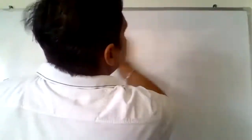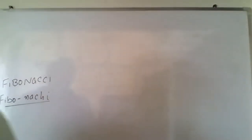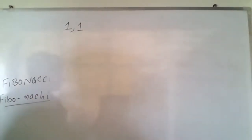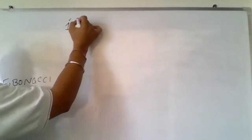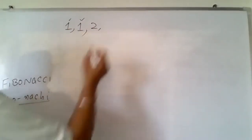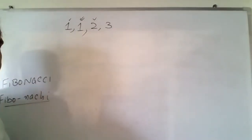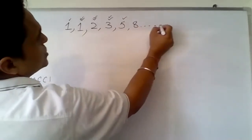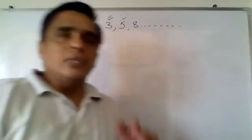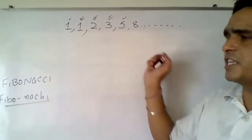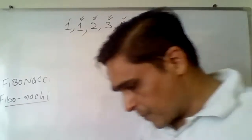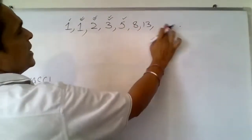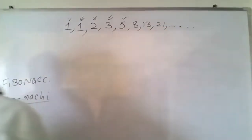A Fibonacci sequence is the sequence in which the first two terms are 1, and third term onward each term is the sum of the previous two terms. So the sequence is: 1, 1, 2, 3, 5, 8, 13, 21 and so on. This definition is important because the first exercise has a question based on it.